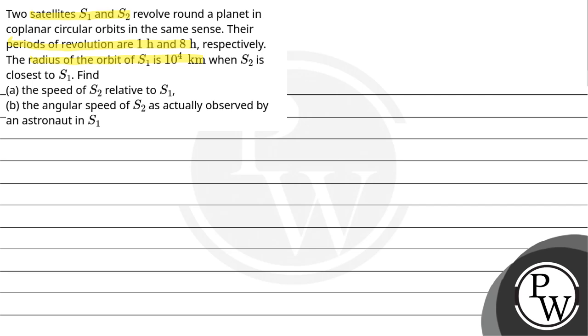Our key concept here is Kepler's third law. According to this law, the square of the time period of a body revolving in an orbit is directly proportional to the cube of the orbital radius: T^2 ∝ R^3.